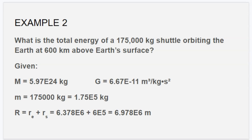The mass of the earth has not changed. It's still 5.97 times 10 to the 24th. The universal gravity constant is constant, so it's the same value. The mass of our satellite is 175,000 kilograms, converting that to scientific notation 1.75 times 10 to the 5th kilograms.